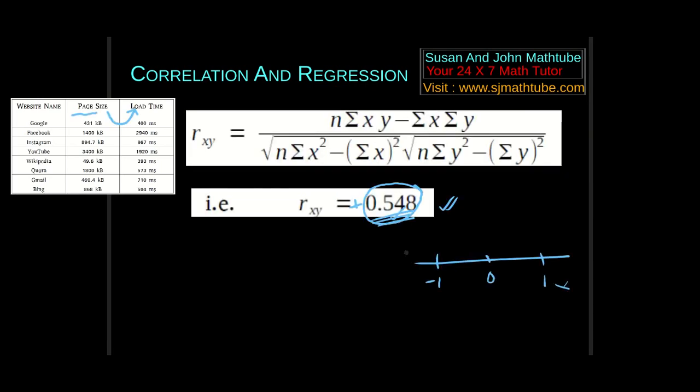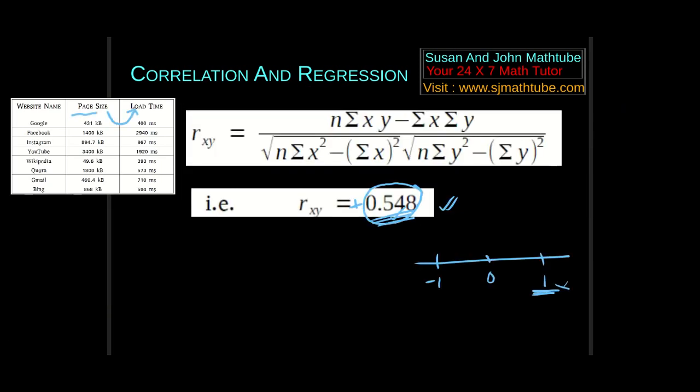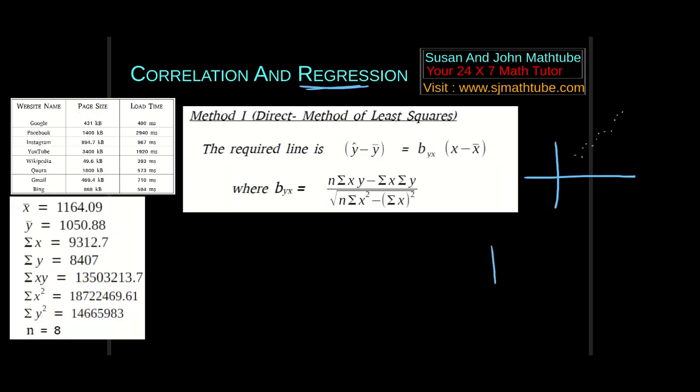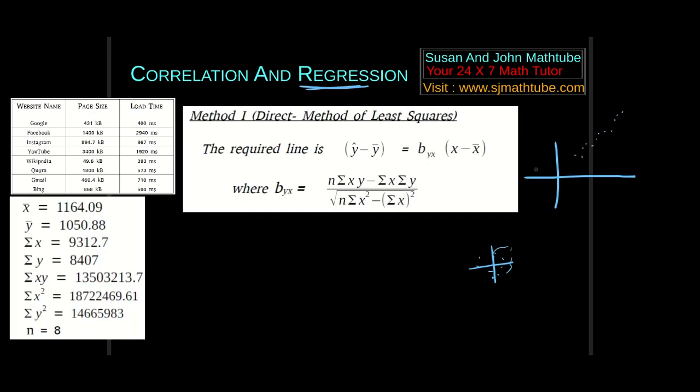If the correlation is very near to 1, it will almost look like a line. If it is equal to 1, it will be a line. If it is equal to minus 1, it will also be a line. When it comes near to 0, it will be completely scattered here and there.